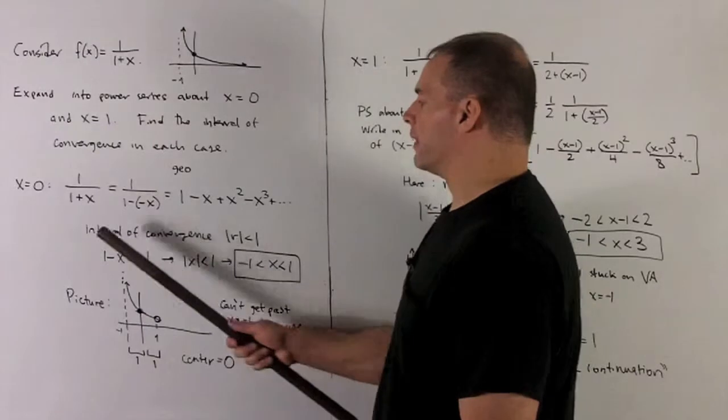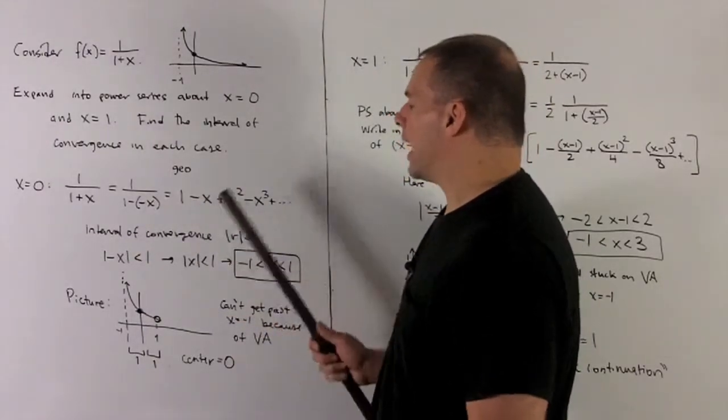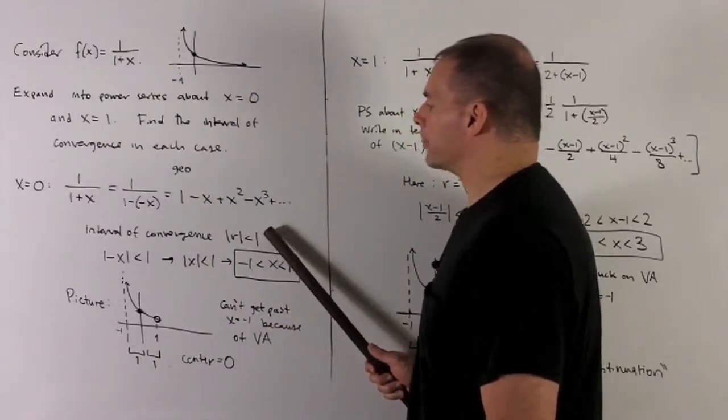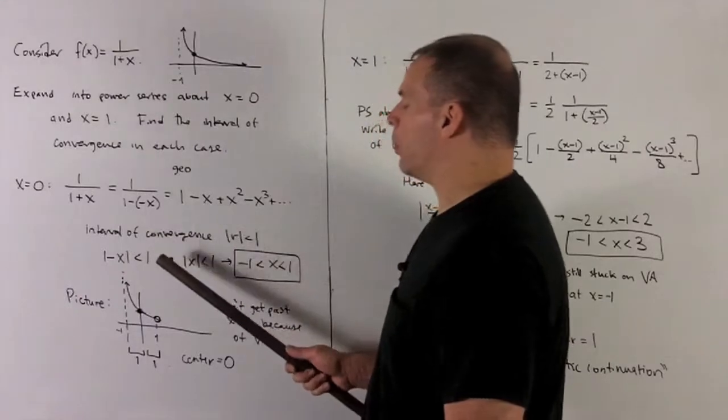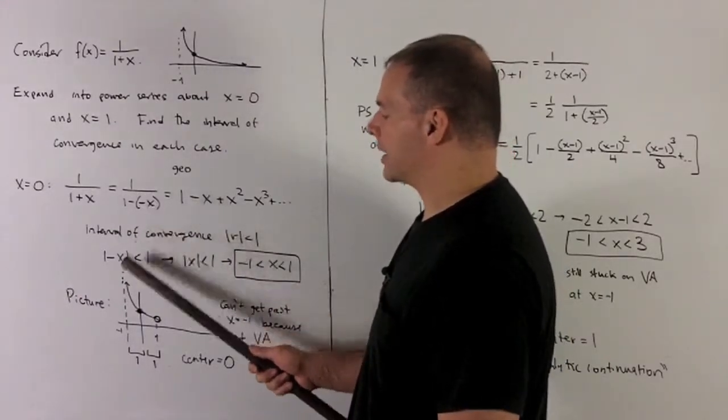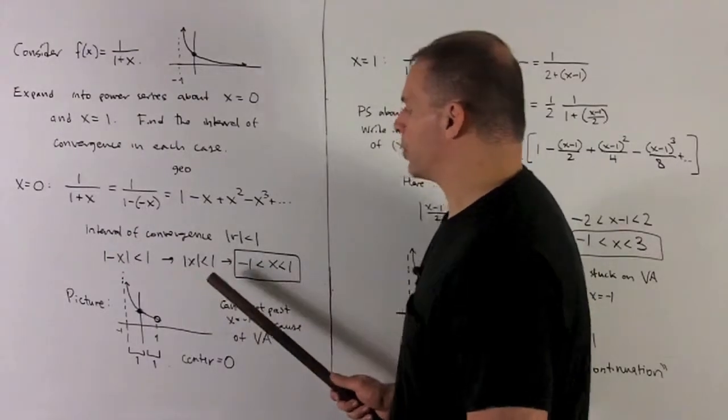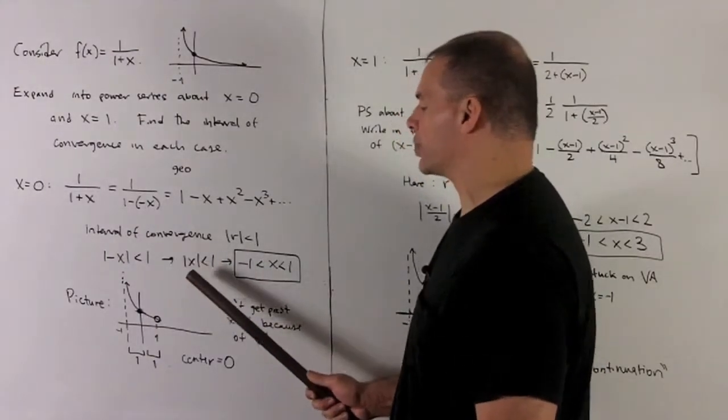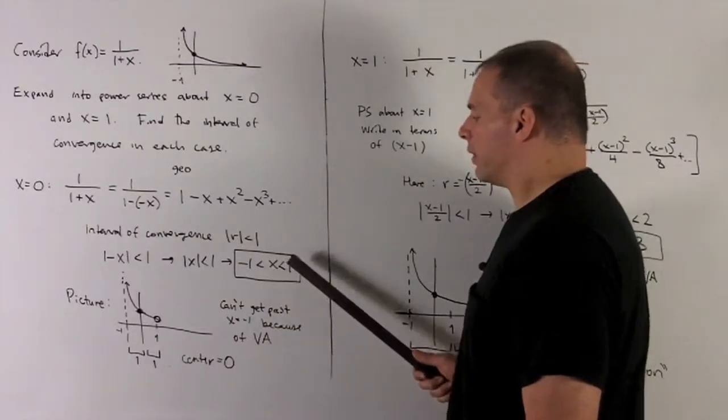For the interval of convergence, this is my r now, so we need absolute value of r strictly less than 1. We're asking for absolute value of minus x strictly less than 1, which is the same as |x| strictly less than 1. We decode this by putting 1 here, minus 1 on the other side, and drop the absolute value signs. So here's my interval of convergence.